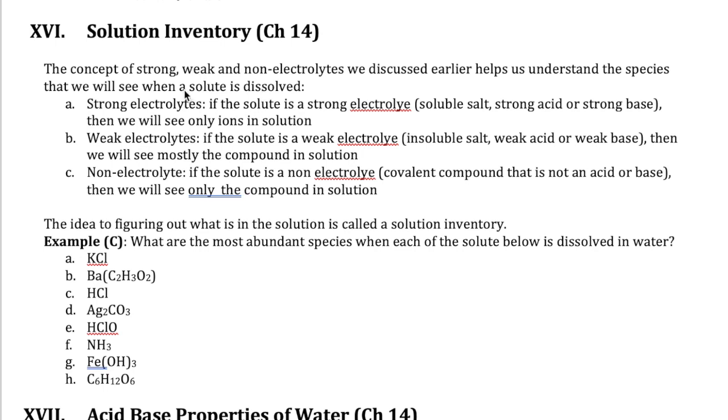The way we're going to figure out what type of species are actually observed in solution depends on whether our solute is one of these types. So if it's a strong electrolyte then that solute is going to dissociate completely into ions when dissolved in water. The categories that belong in strong electrolytes would be soluble salt, strong acids, or strong bases.